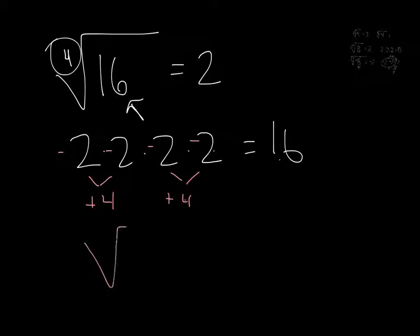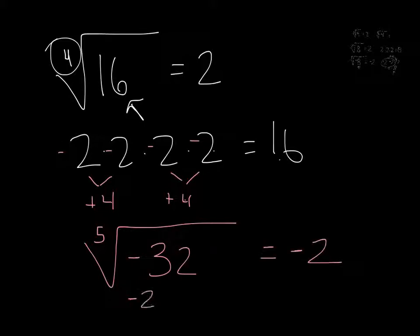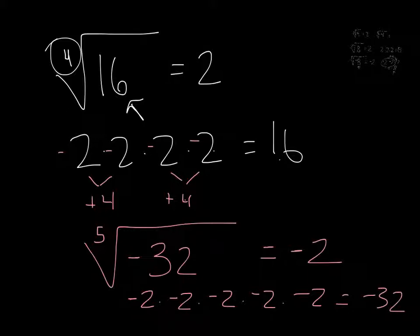But the fifth root of negative 32 would be negative 2, because negative 2 multiplied by itself five times equals negative 32. This leads us to the general rule: any even index root cannot have a negative radicand without getting into imaginary numbers, but if the index is odd, negative numbers are allowed.